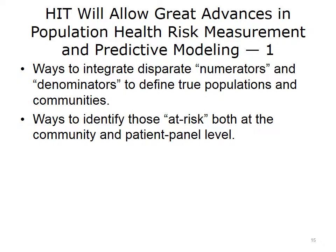This field of risk segmentation and predictive modeling in population health is evolving very rapidly as new electronic data sources come online and as our healthcare system increasingly reorients itself toward population health. Before we close this lecture, it is worth reviewing some of the major ways health IT is likely to lead to advances in the coming years. The old model of medical care — just focusing on the patient in the hospital bed or ambulatory office — has given way to understanding the cohort from which that patient comes, and how we can most efficiently target people with great need. Increasingly, with new data sources and analytic tools, we will be able to identify who is part of the population denominator and who will fall into the numerator of the various risk pyramids.